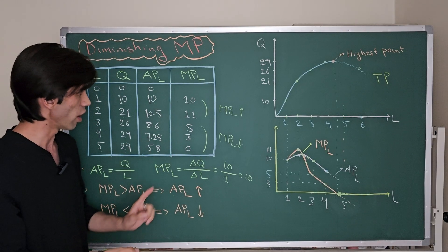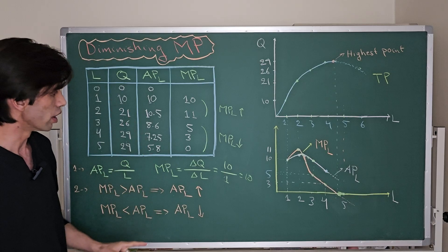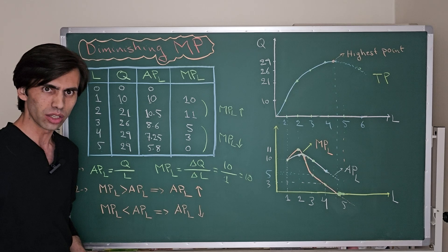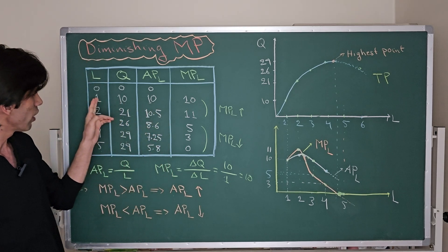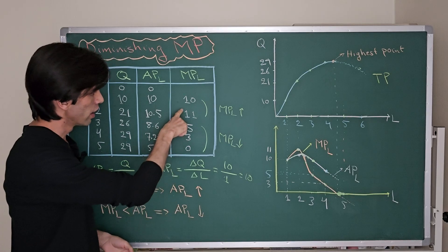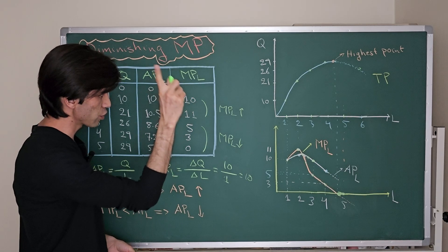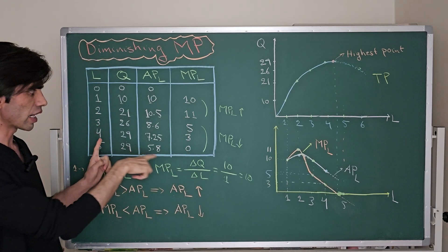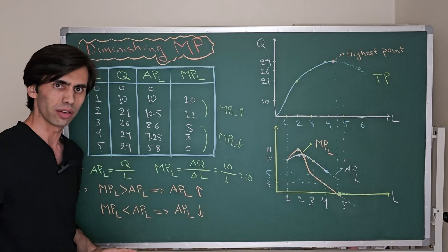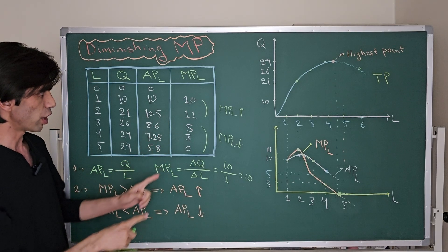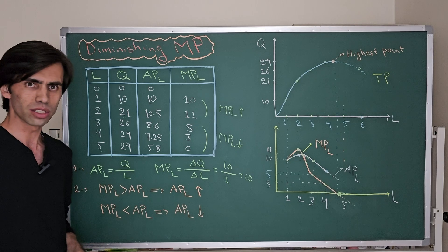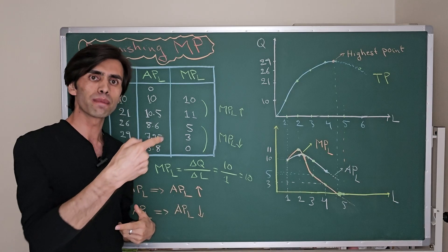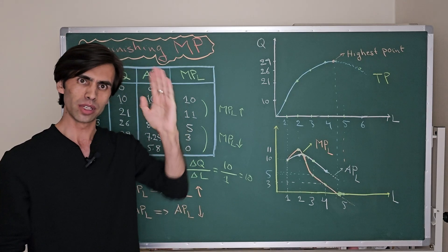So how do we find the relationship? First, consider the marginal product of labor — it follows the law of diminishing marginal returns. You can see that when we have the first worker, the marginal product is 10; the marginal product of the second worker is 11. But when you hire the third worker, the marginal product declines from 11 to 5. So the marginal product first increased, then decreased. This means the marginal product of an input is diminishing after some point.